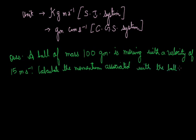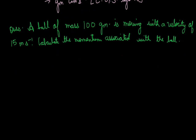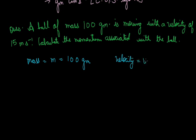In this question, we are given the mass and velocity. By directly multiplying them, we can get the momentum. Mass, represented by m, is 100 gram, while velocity, represented by v, is 15 meter per second. Now, mass is in gram, which is a CGS unit, but velocity is in meter per second, which is the SI system. So the systems of both units differ.